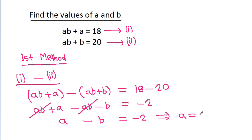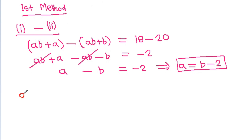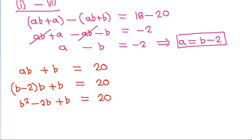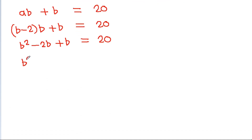So a will be equal to b minus 2. We have ab + b is equal to 20, and substituting a = b minus 2, we get (b minus 2) times b plus b is equal to 20. Expanding: b squared minus 2b plus b is equal to 20.